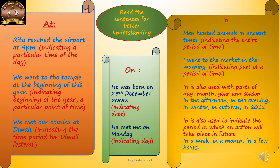Now, when 'in' is used. Men hunted animals in ancient times — this indicates the entire period of time, the ancient period. So if I don't want to mention a specified time but want to show just the period of time, I will use 'in'. 'At' refers to a particular specified time, whereas 'in' refers to a period of time. I went to the market in the morning — it indicates that morning time period, not a specific time. 'In' is also used with parts of the day, month, year, and season: in the afternoon, in the evening, in winter, in autumn, in 2011.